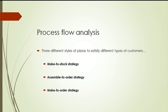There are three different strategies that a company can follow. The first is the make-to-stock strategy: produce standard products and services for immediate sale or delivery. The second is the assemble-to-order strategy: produce standard components that can be combined to customer specifications. The third is the make-to-order strategy: produce the products to customer specifications after the order has been placed.